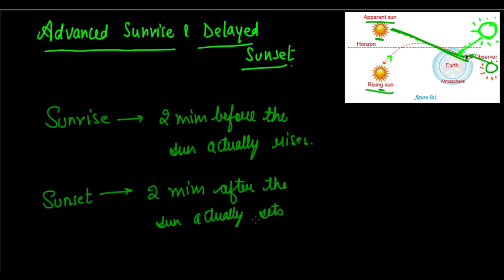So basically it is caused due to the atmospheric refraction of light coming from the Sun, and the creation of an apparent position of the Sun — an apparent Sun — which makes it feel that the Sun has risen or that the Sun has not yet set.